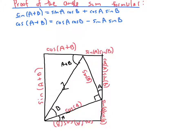But remember, we have a rectangle here, so the opposite sides have equal length. This tells us that sine of A plus B has to equal sine of A cosine of B plus cosine of A sine of B, which is exactly the first angle sum formula.